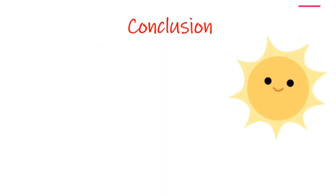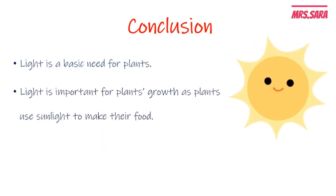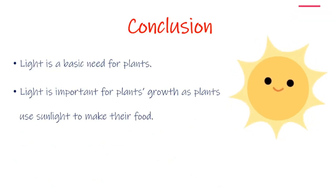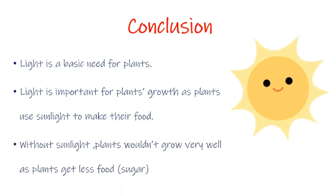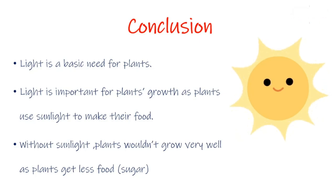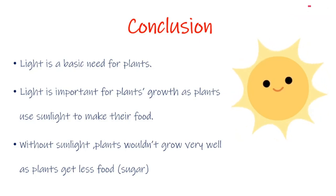Our conclusion is that light is a basic need for plants and light is important for plant growth, because plants use sunlight to make their food. Also, without sunlight, plants wouldn't grow very well, because plants get less food, which is called sugar.